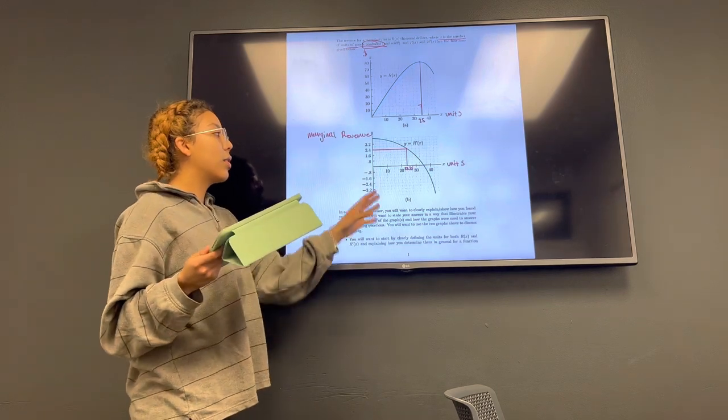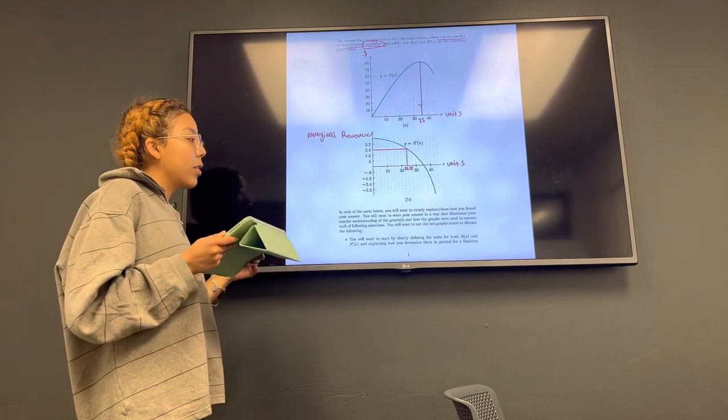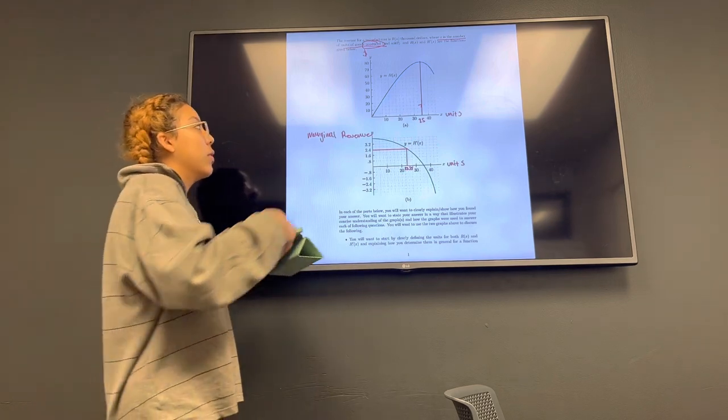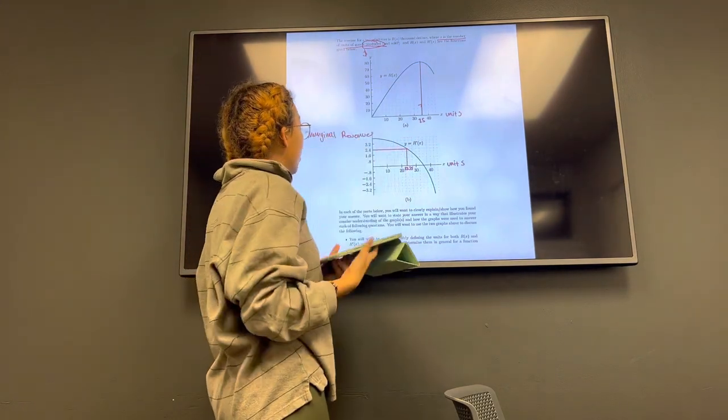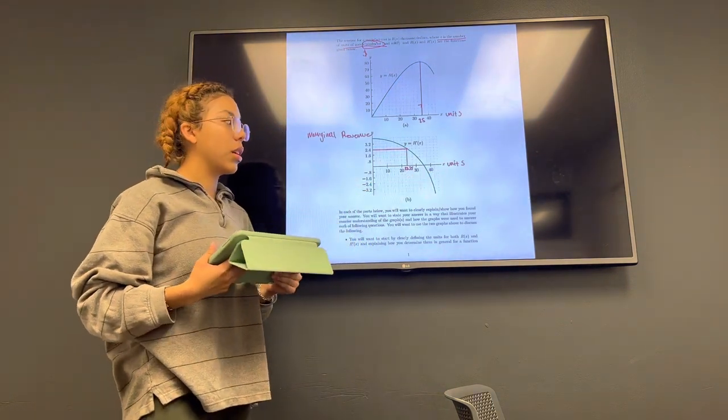R'(x) represents the derivative of R(x), and the derivative is the slope right here, which would be marginal revenue over levels of production.